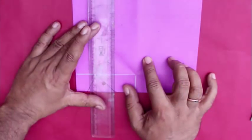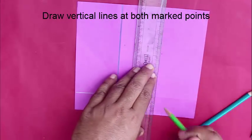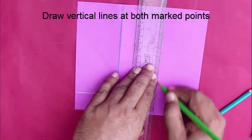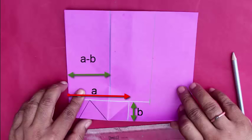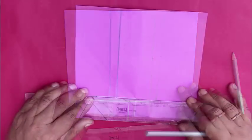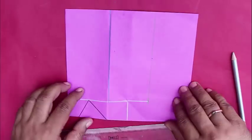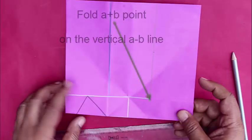These lines are a minus b and a plus b distance apart from the end. This is the length, a minus b and a plus b distance. Now we will fold the a plus b point onto the a minus b line.